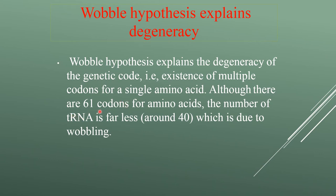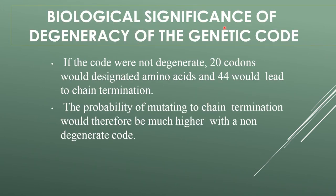Although there are 61 codons for amino acids, the number of tRNAs is far less, which is due to wobble pairing. Biological significance of degeneracy: if the codons were not degenerate, 20 codons would designate amino acids and 44 would be chain termination codons. The probability of mutating to a chain termination codon would therefore be much higher with non-degenerate codons.